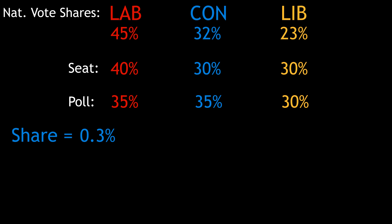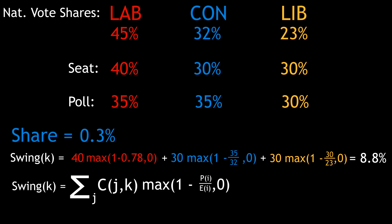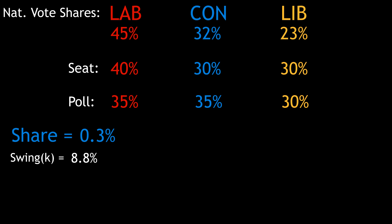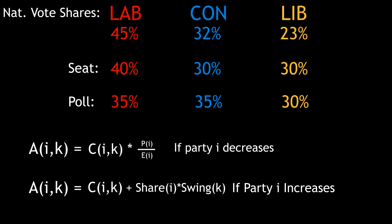Next, we work out the proportion of voters in a particular seat that have defected — called the swing voters. Looking at our example seat, Labour has a vote share of 40%, and the polling data predicts a national vote share of 35%, which is down 78% from 45%. So the proportion of defected voters is Labour's vote share 40% multiplied by 1 minus 0.78. To find the total swing voters for the seat, we repeat the process for the Conservatives and the Lib Dems, using the max function to exclude cases where parties' vote share increases. The predicted Conservative vote share for this seat is their old vote share plus their gain multiplied by the swing voters, which comes out at 32.7%. If their vote share had declined, the new share would be their current vote share multiplied by the predicted vote share over the previous vote share. That's the transition model summarised.